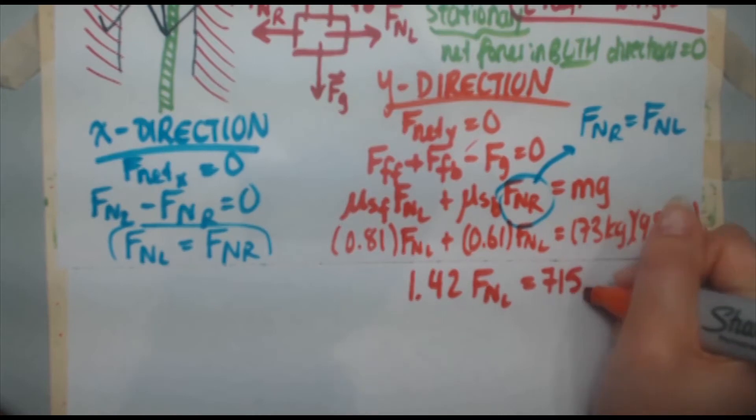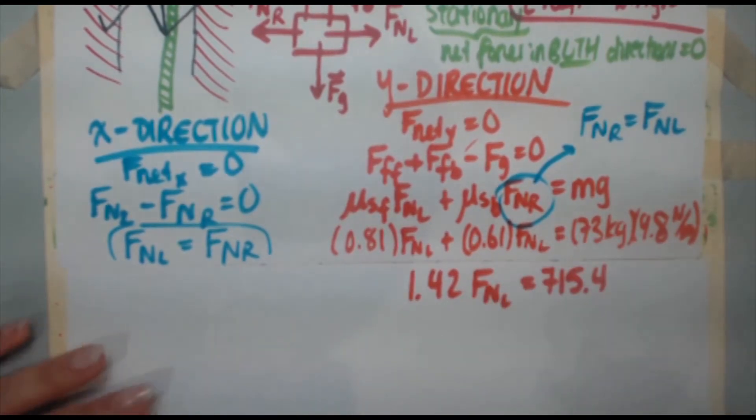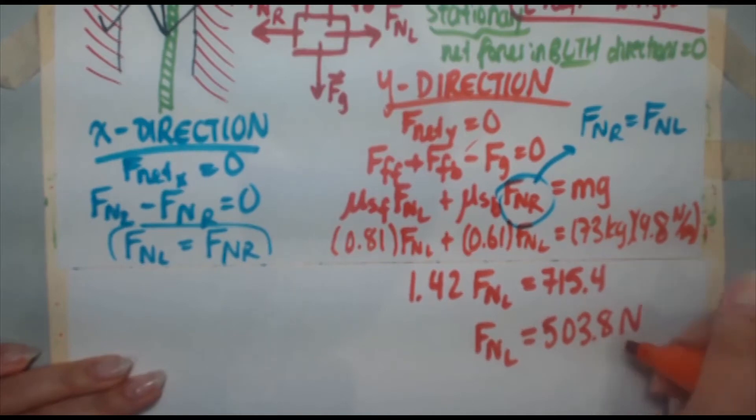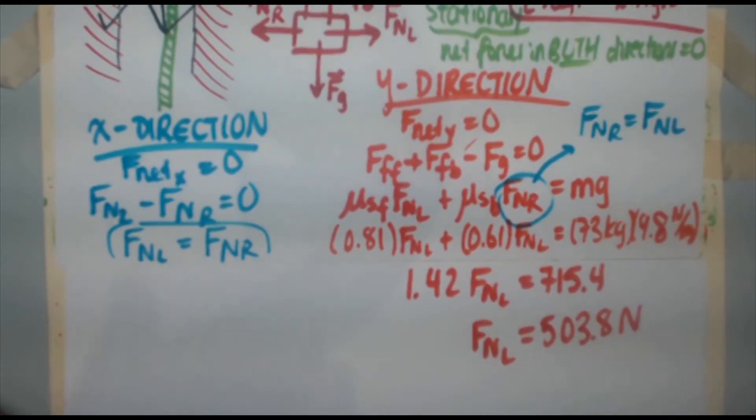So divide both sides by 1.42 and you get FNL equals 503.8 newtons. So this is the force that the wall pushes on the climber with.